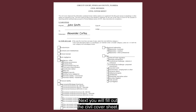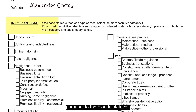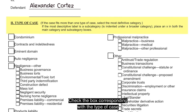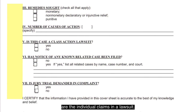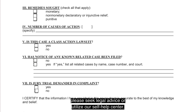Next, you will fill out the civil cover sheet. This document is used for reporting judicial information pursuant to the Florida statutes. Check the box corresponding with the type of case you are filing and fill in the remaining information. Note that causes of action are the individual claims in a lawsuit. If you are unsure what information to put, please seek legal advice or utilize our self-help center.